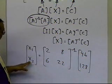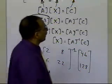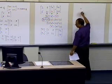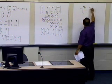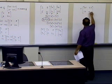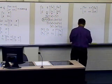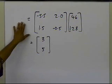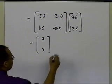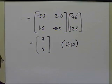So I'm moving the A matrix to the right-hand side by using its inverse. The inverse of this particular matrix was given earlier as [−5.5, 2.0; 1.5, −0.5], and multiplying it by the right-hand side [46; 128] gives us 3 and 5. So x1 = 3 and x2 = 5. That's the definition of the inverse of a matrix and how it can be used to solve a set of equations. That's the end of this segment.